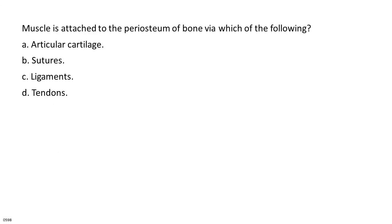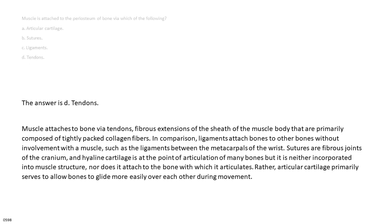Muscle is attached to the periosteum of bone via which of the following? A. Articular cartilage. B. Sutures. C. Ligaments. D. Tendons. The answer is D, tendons. Muscle attaches to bone via tendons, fibrous extensions of the sheath of the muscle body that are primarily composed of tightly packed collagen fibers. In comparison, ligaments attach bones to other bones without involvement with a muscle. Sutures are fibrous joints of the cranium, and hyaline cartilage is at the point of articulation of many bones but does not attach to the bone with which it articulates. Articular cartilage primarily serves to allow bones to glide more easily over each other during movement.